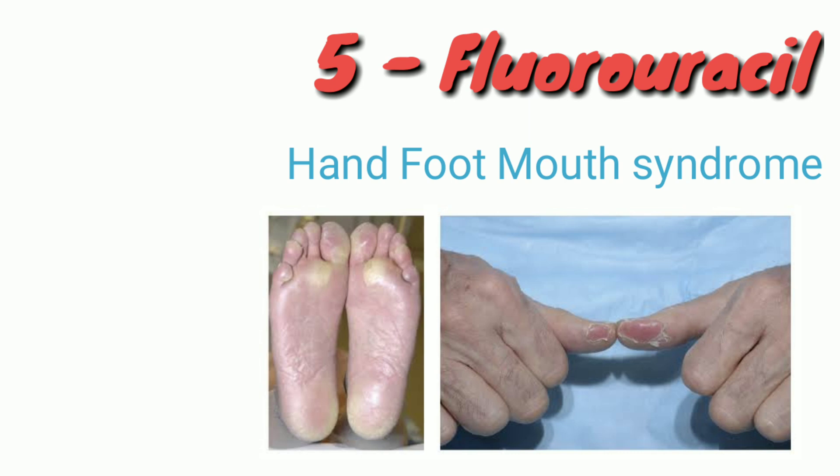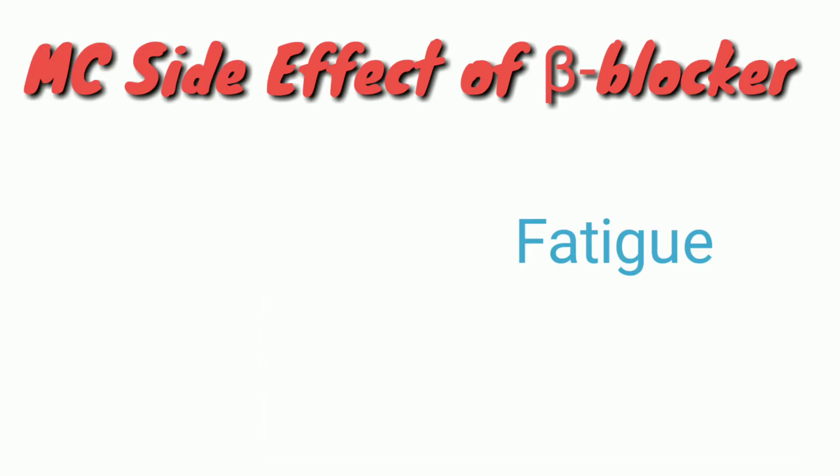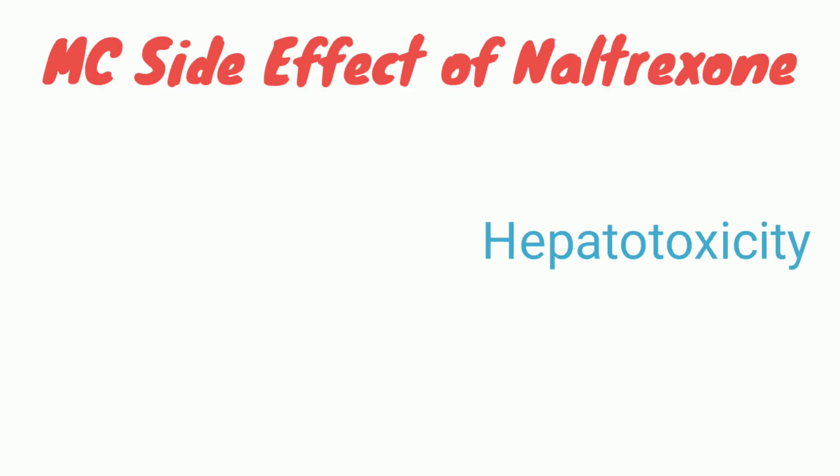5-fluorouracil causes hand-foot-and-mouth syndrome — a reddish discoloration of the hands, feet, and mouth. The most common side effect of beta blockers is fatigue and malignant hypotension. The most common side effect of naltrexone is hepatotoxicity — it is an opioid antagonist.